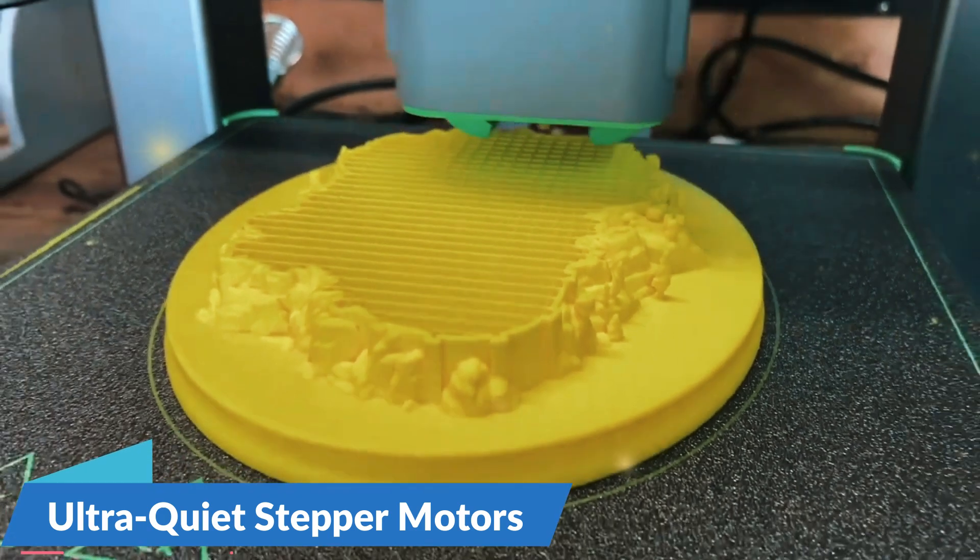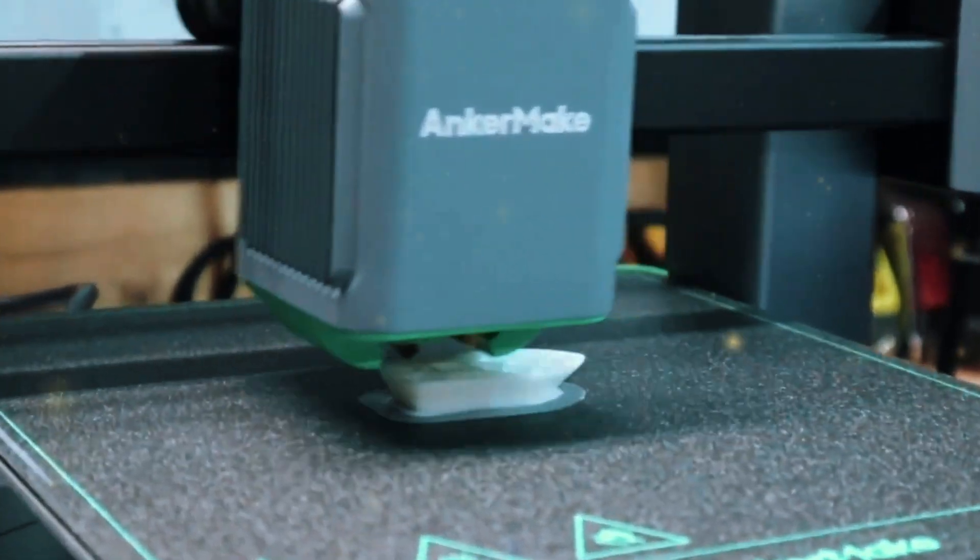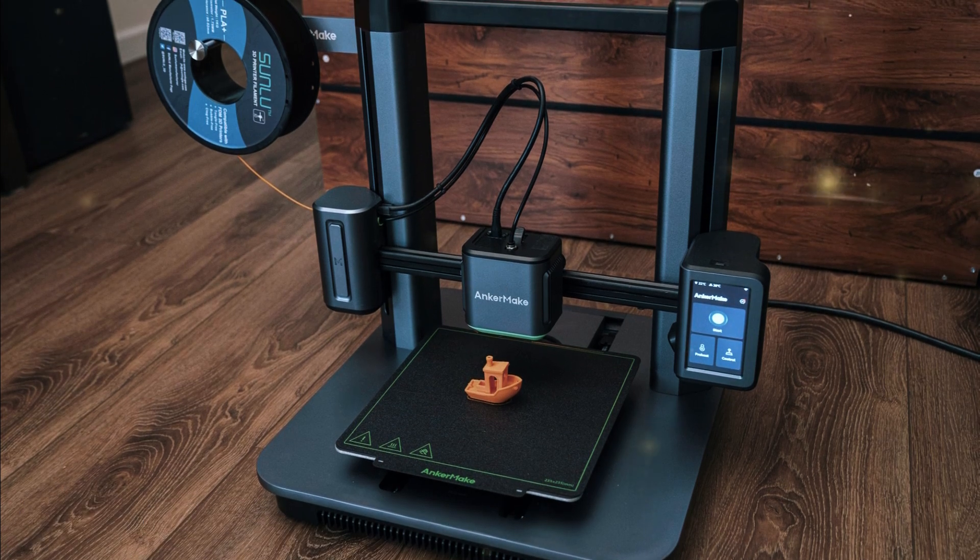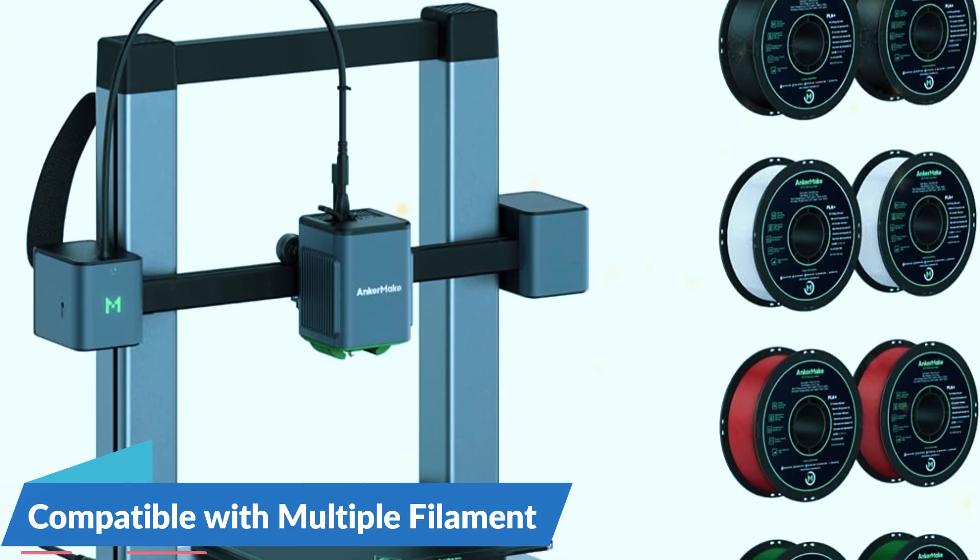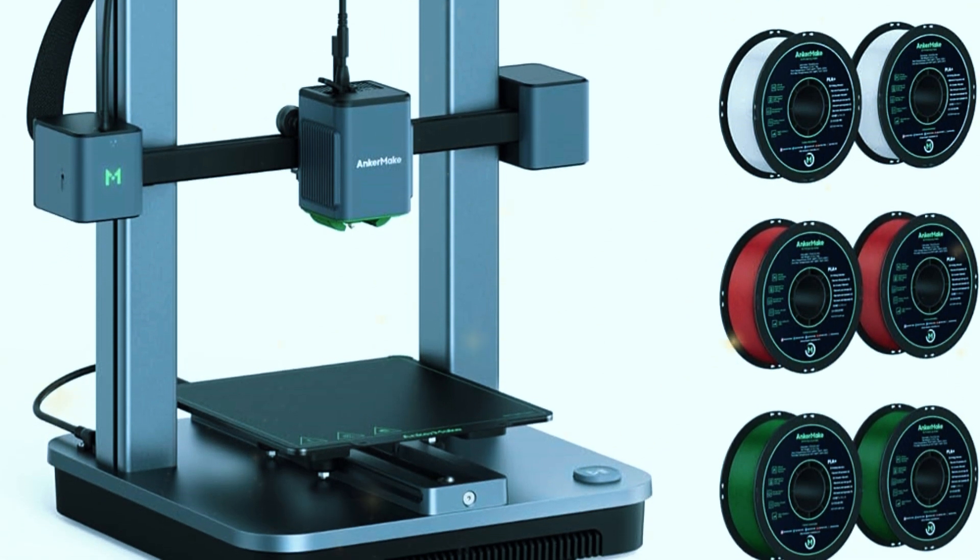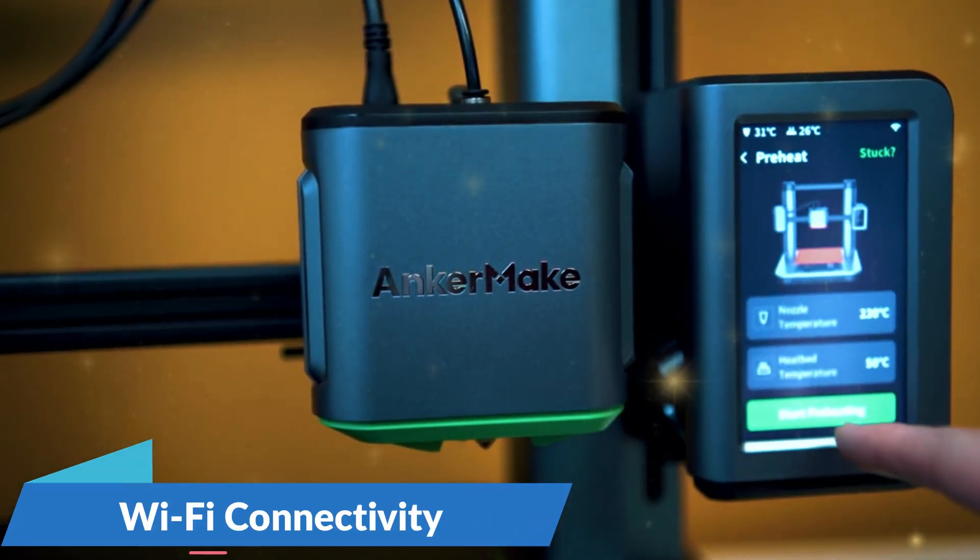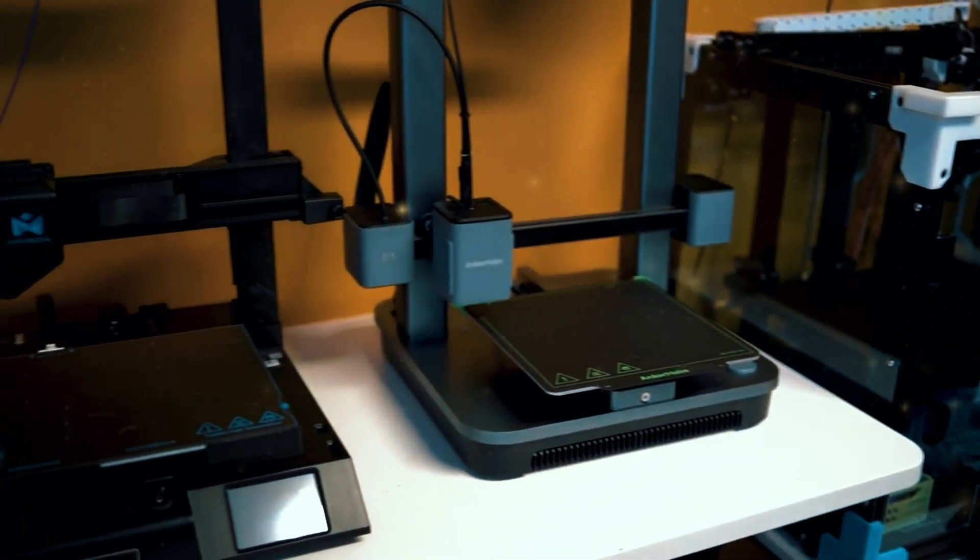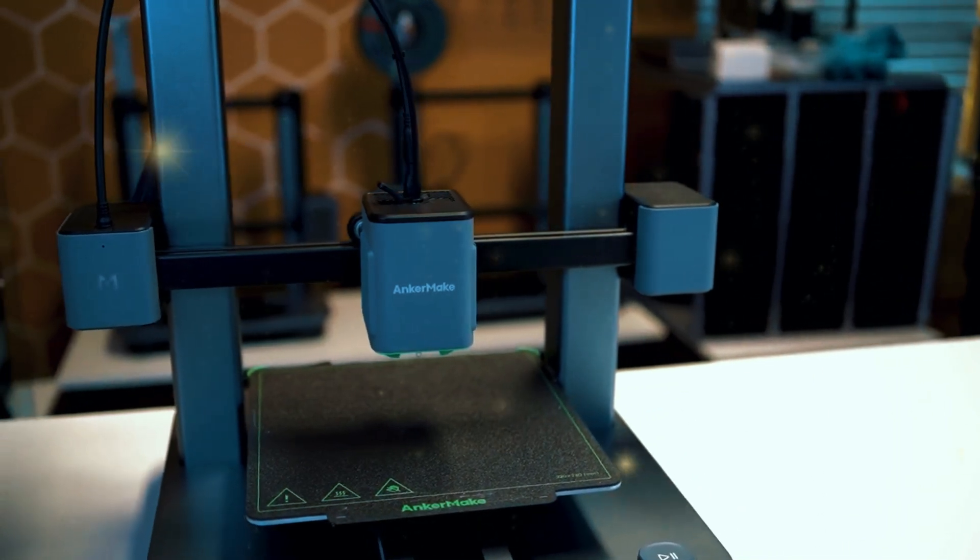This printer also boasts ultra-quiet stepper motors, reducing noise to as low as 50 decibels, making it a great choice for home use or in shared spaces where noise can be an issue. The M5 C's auto-resume function is another handy feature, allowing your prints to pick up right where they left off in the event of a power outage or interruption. The Anchormake M5 C is compatible with multiple filament types, including PLA, ABS, PETG, and TPU, giving you plenty of flexibility depending on your project's needs. Its easy to use touchscreen interface and Wi-Fi connectivity make it simple to manage and monitor your prints from anywhere, whether you're at home or on the go. With its combination of advanced features and ease of use, the Anchormake M5 C3D printer is a fantastic option for those who want a reliable and innovative machine.